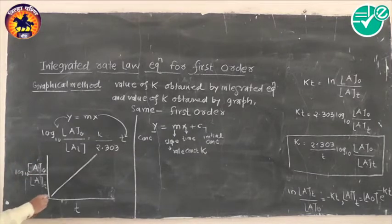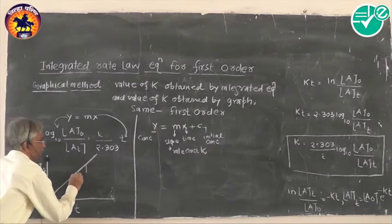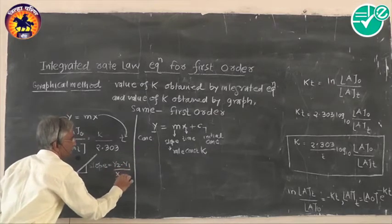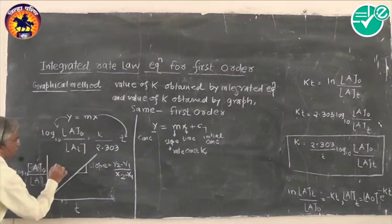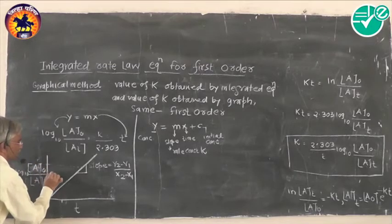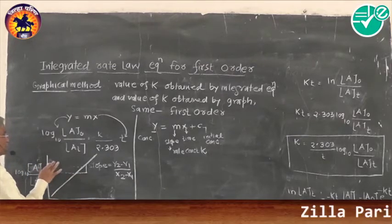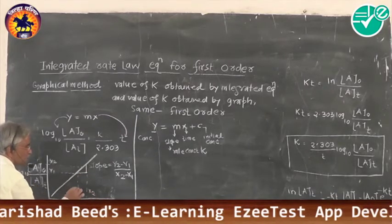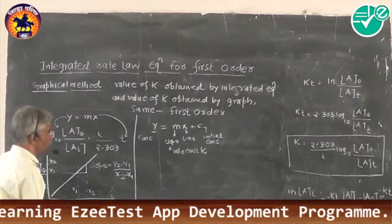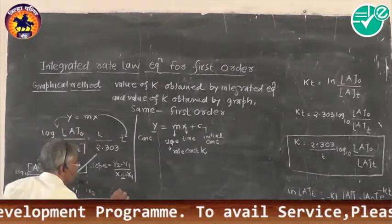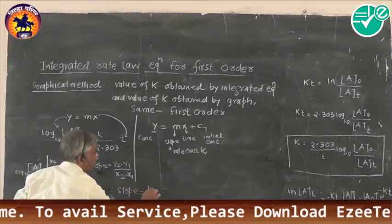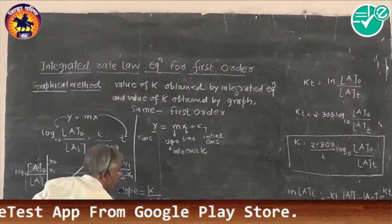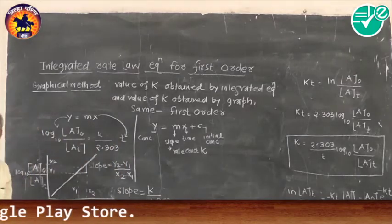Select any two points and calculate the slope of the equation. Slope equals y2 minus y1 divided by x2 minus x1. From the slope, we know that slope equals k upon 2.303, or k equals 2.303 multiplied by the slope of the graph which is experimentally obtained.